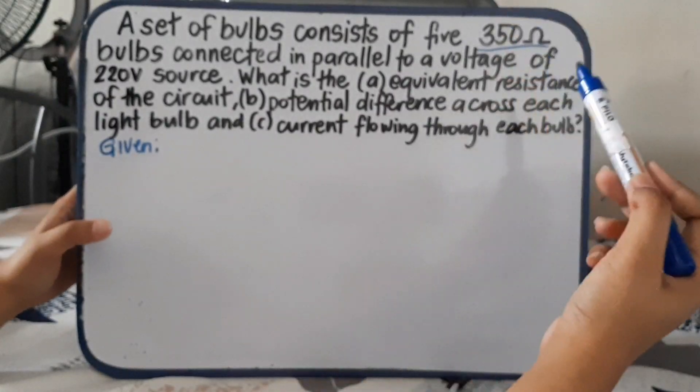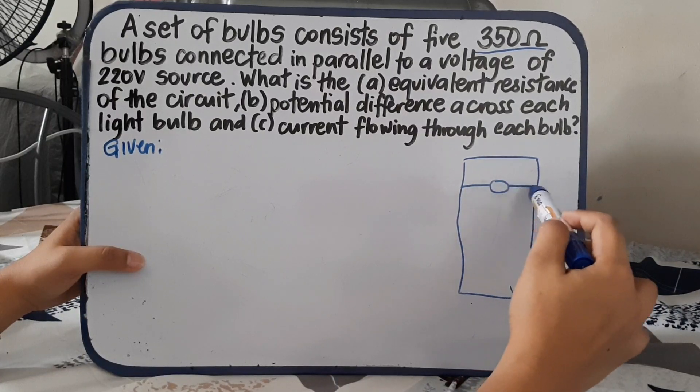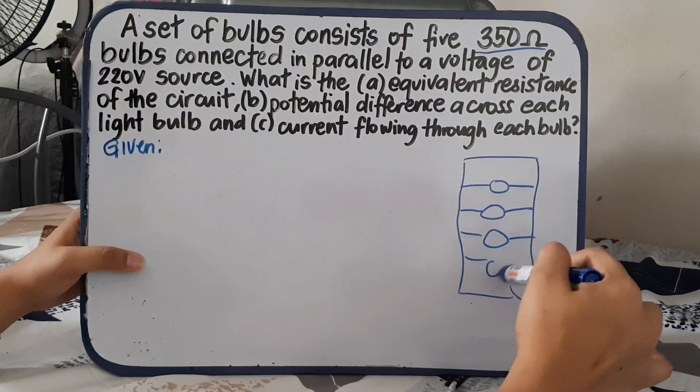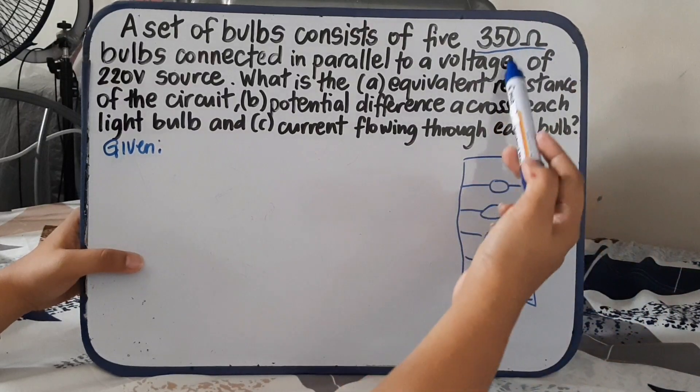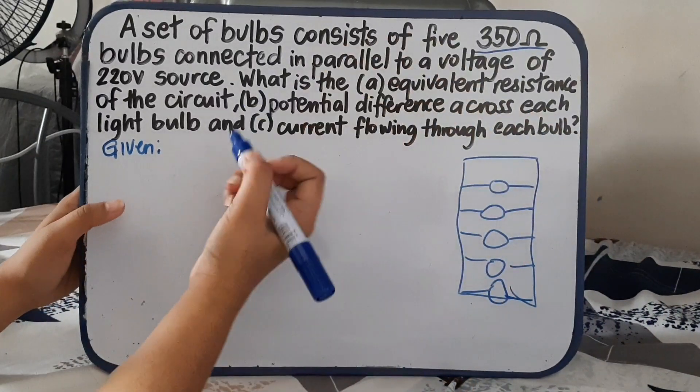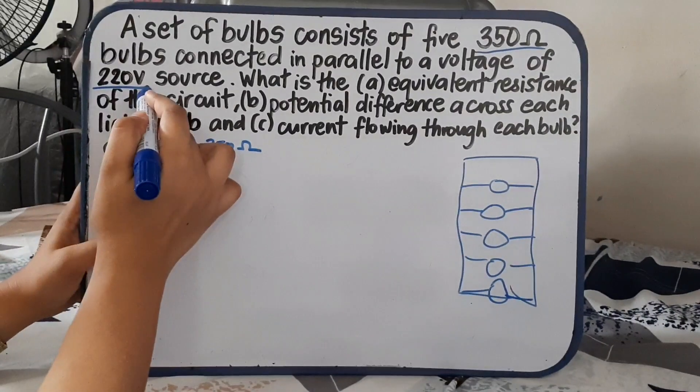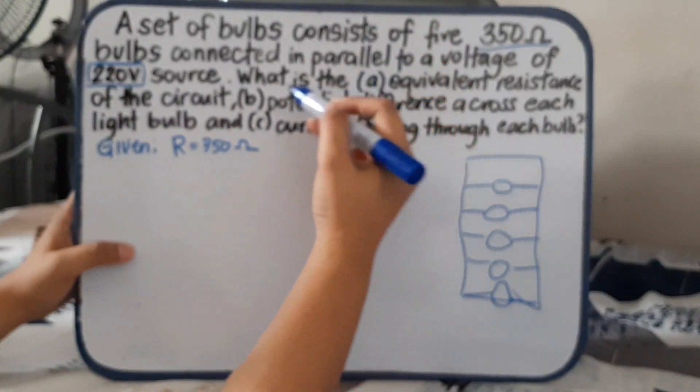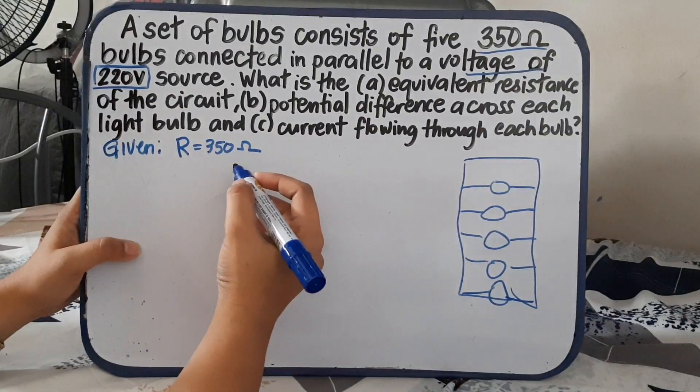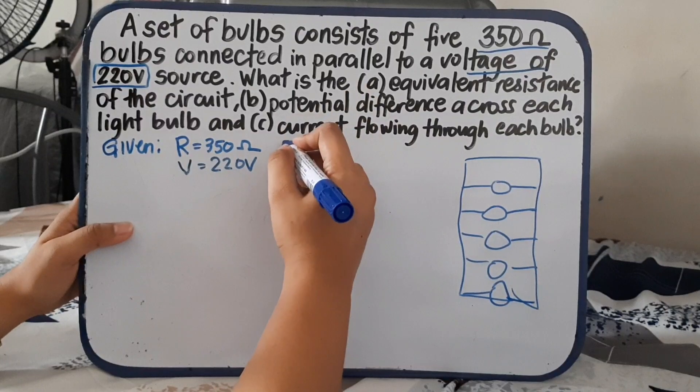Let us start with the given. What are the given from the problem? We have 350 ohms. Since we have parallel circuit, let's say for example, this is our diagram. We have 5 bulbs. The 350 is the resistance of each bulb. So we have 350 ohms and a voltage of 220 volts.